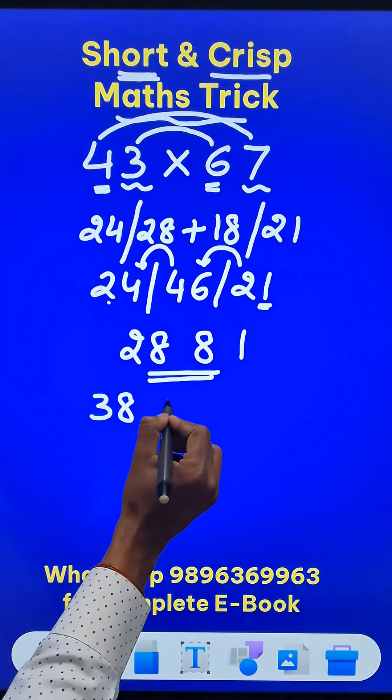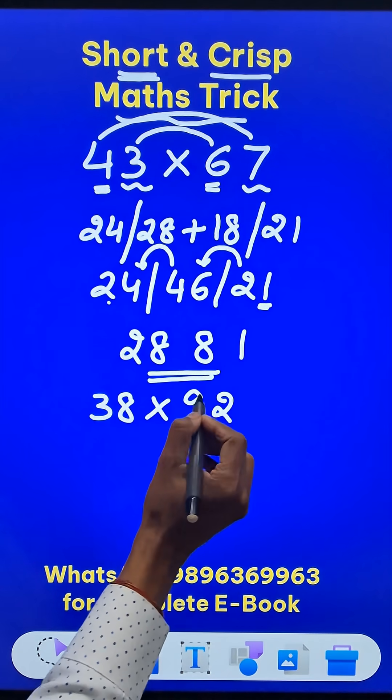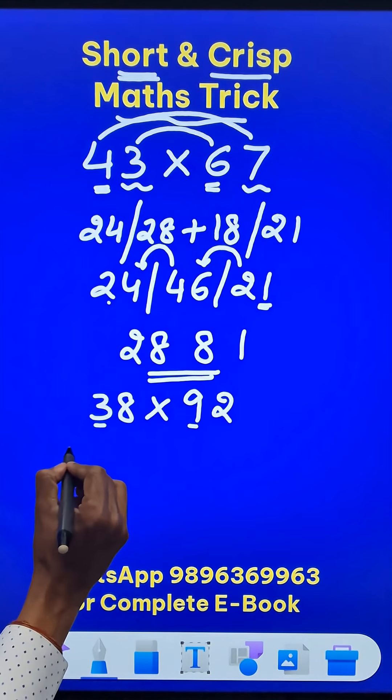Likewise suppose you have to do 38 times 92. Can we do it a little bit more quickly now? First digits 3 times 9, 27.